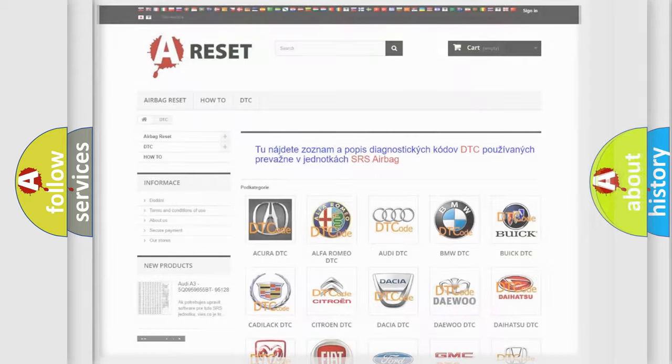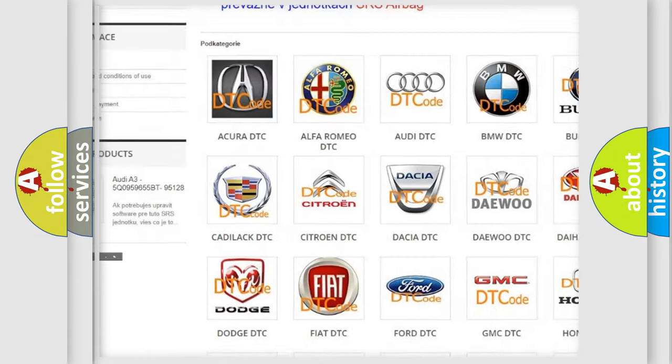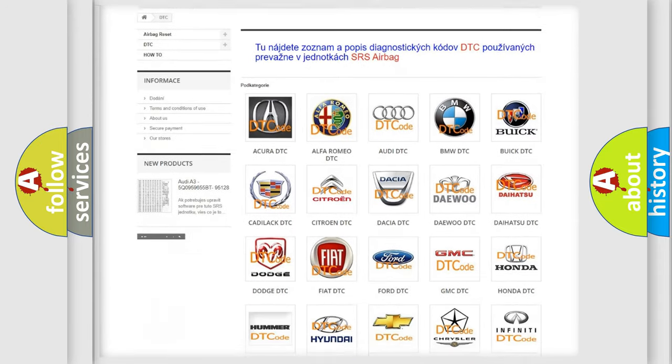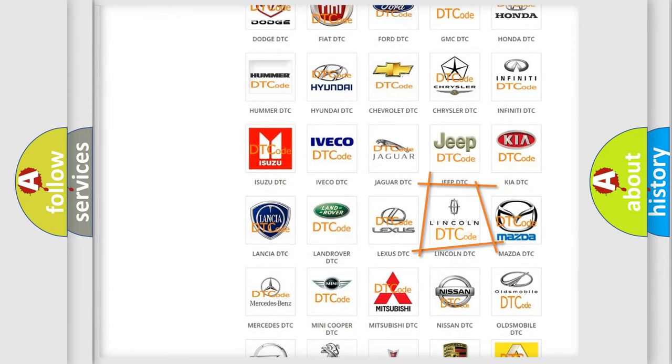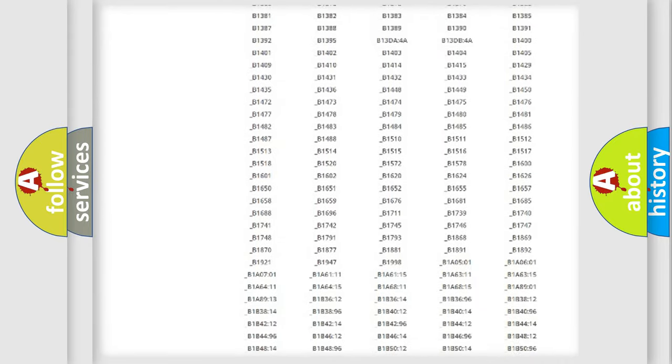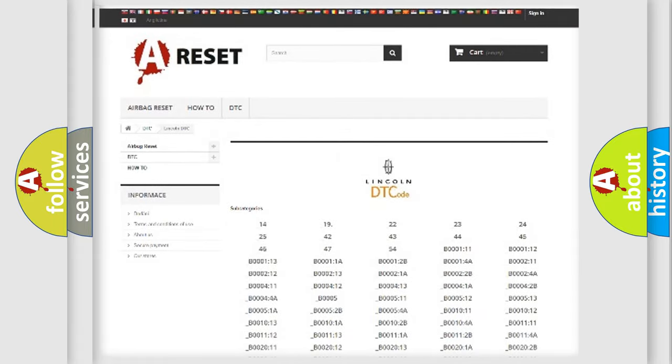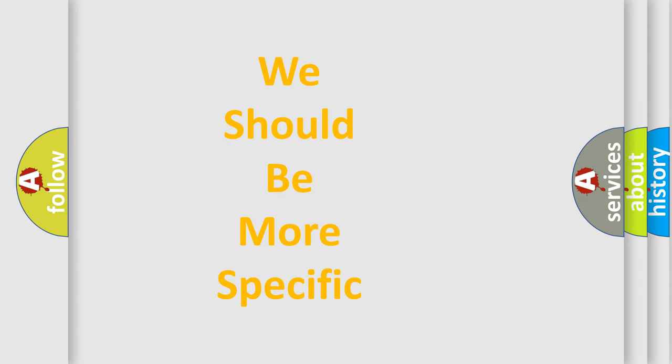Our website airbagreset.sk produces useful videos for you. You do not have to go through the OBD2 protocol anymore to know how to troubleshoot any car breakdown. You will find all the diagnostic codes that can be diagnosed in Lincoln vehicles, and many other useful things. The following demonstration will help you look into the world of software for car control units.